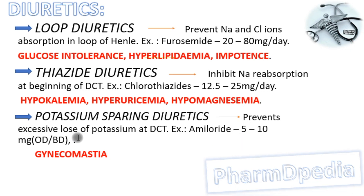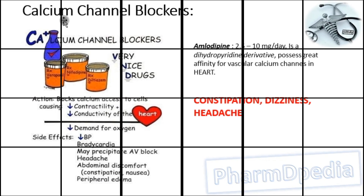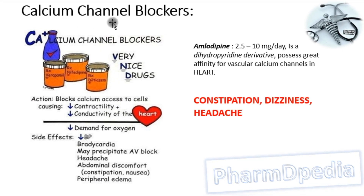Potassium-sparing diuretics are low-efficacy diuretics; they prevent excessive loss of potassium in the distal convoluted tubule. Example: amiloride, 5 to 10 mg per day. Gynecomastia is a common adverse reaction of potassium-sparing diuretics.